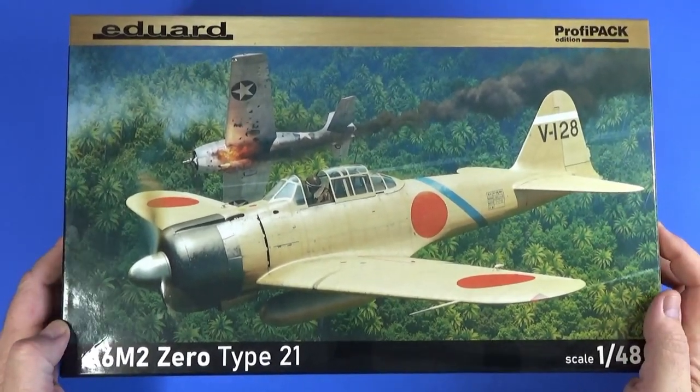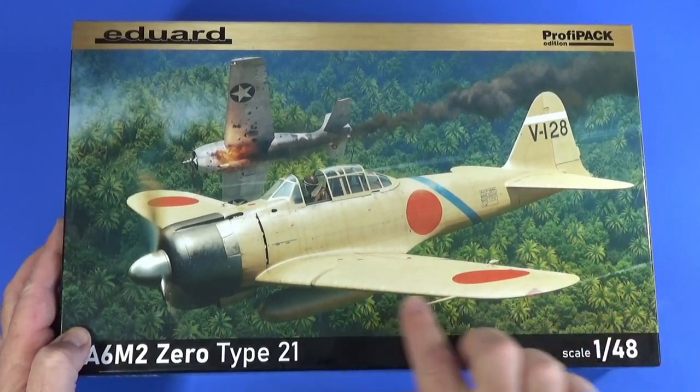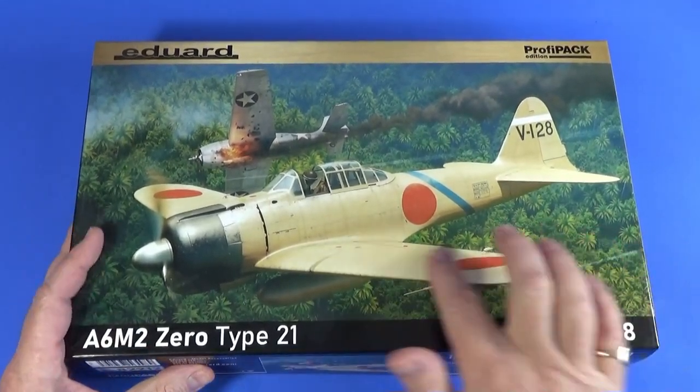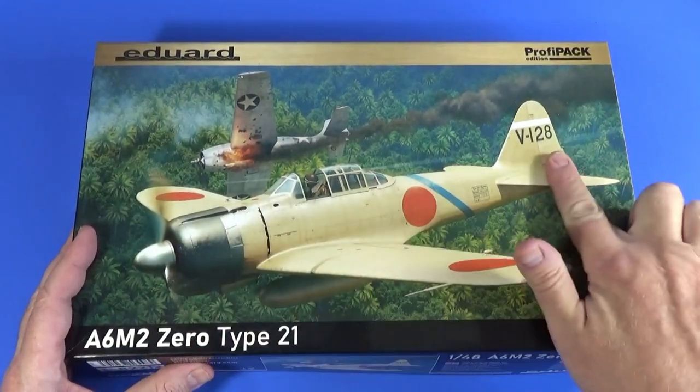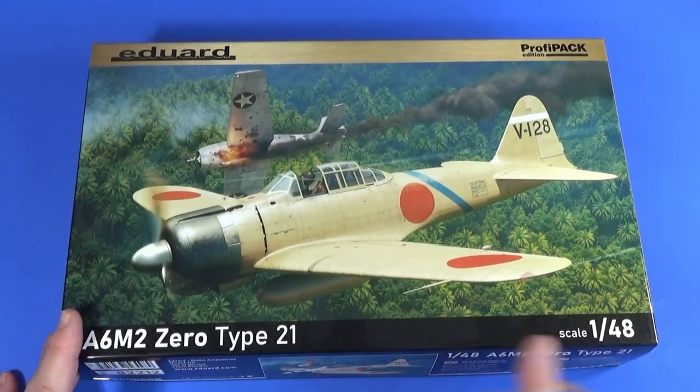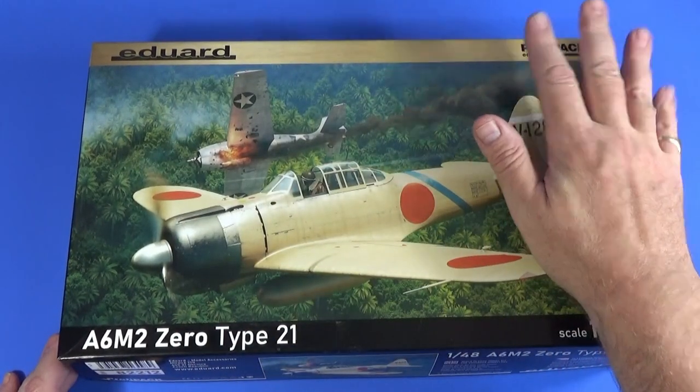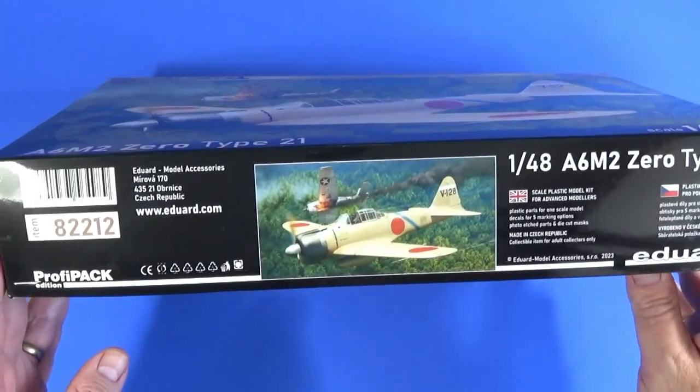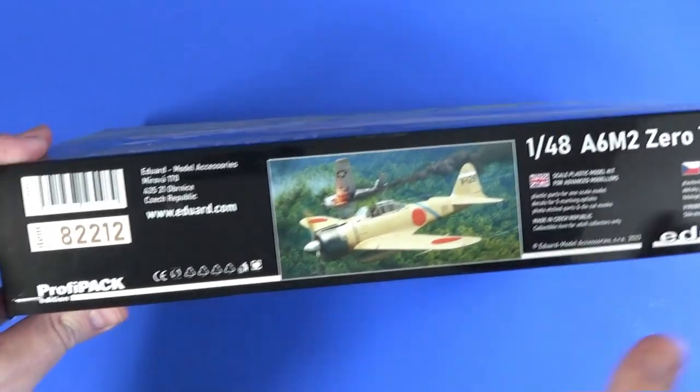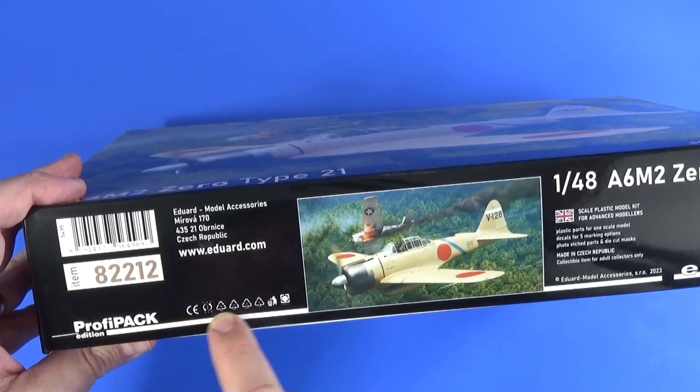Here's a box with some dynamic box art on the front showing probably the kind of markings I imagine I'll be doing actually, probably that all over. I don't know what you call that, Japanese sort of buff colour. Type 210, 1/48th scale, Eduard profi pack edition. On the side, a reprise of the box art.